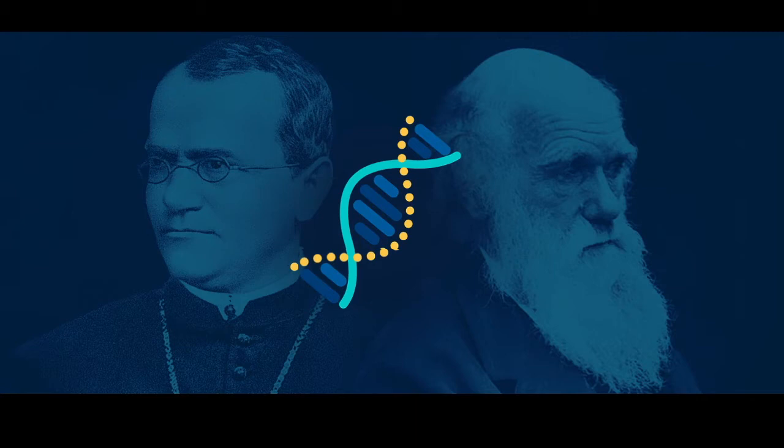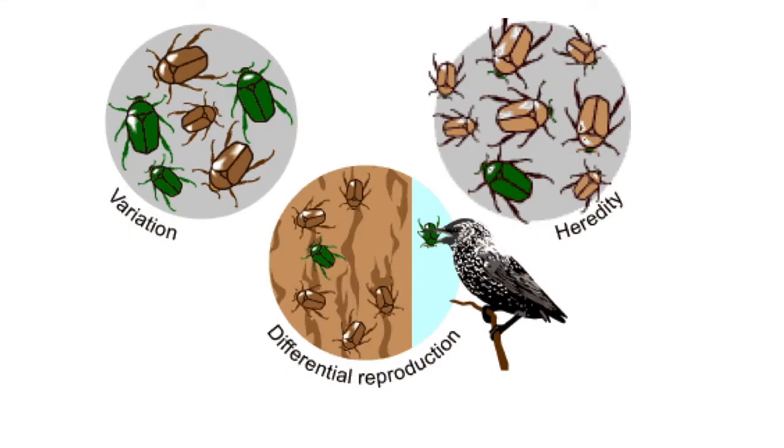who was working on his pea plant experiments between 1856 and 1863, so around the time that Darwin had published Origin. There is evidence that Mendel knew a lot about Darwin and had even read On the Origin of Species. However, Darwin knew nothing of Mendel and his discoveries about the inheritance of traits.